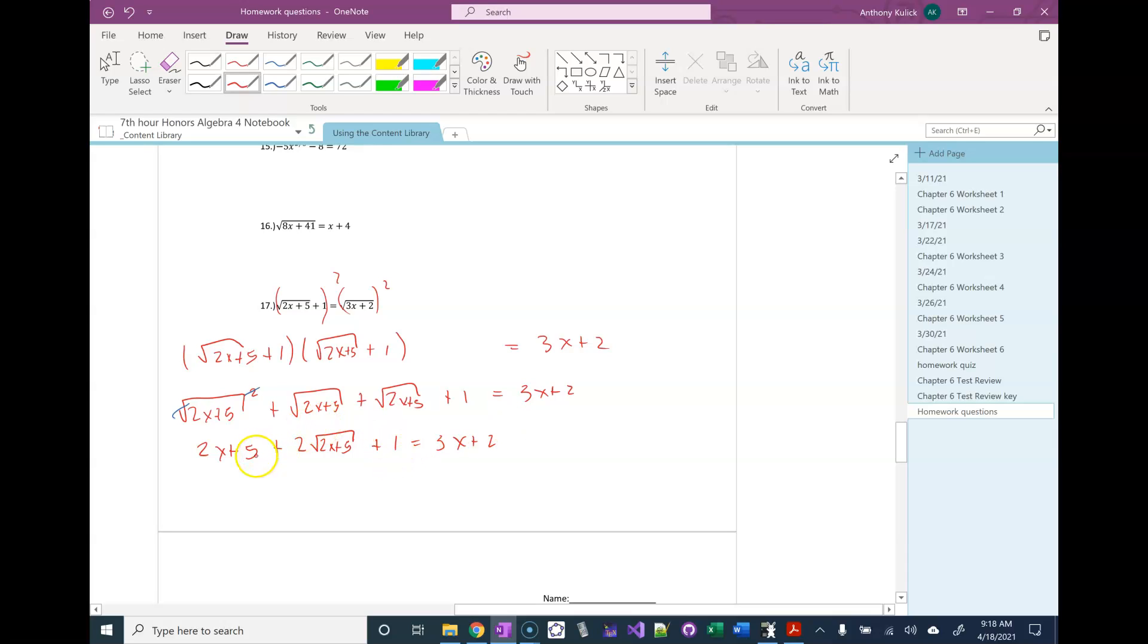I'm just going to move everything onto the other side now. I'm going to subtract the 5, subtract the 1, subtract the 2x. And that's going to give me x minus 4.